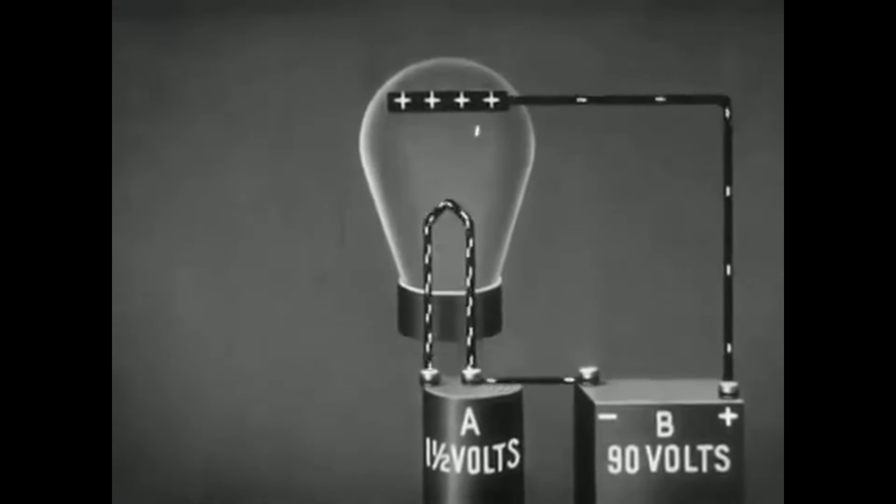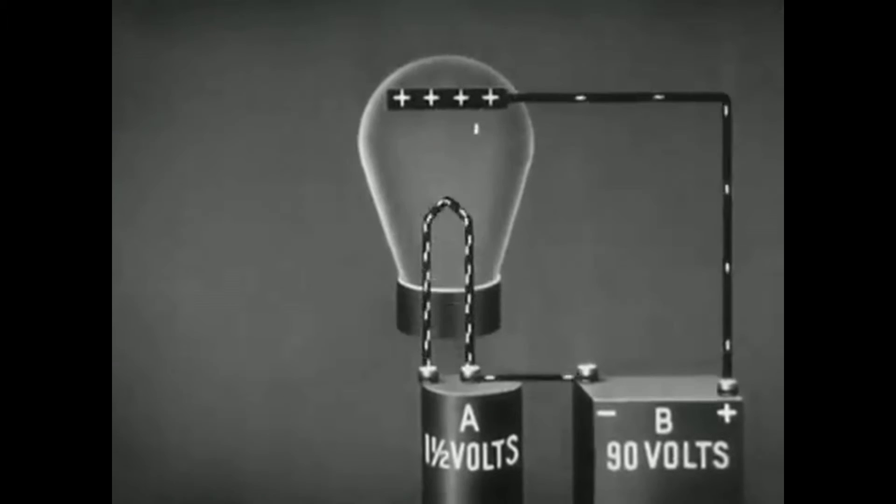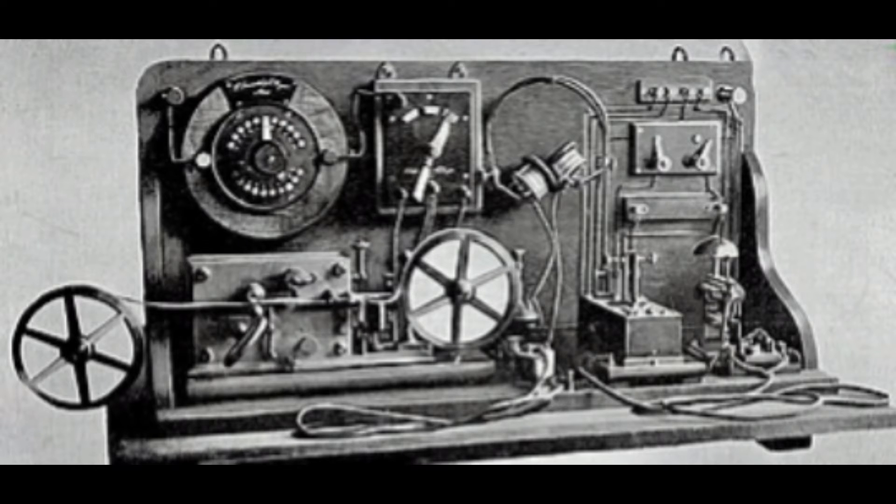The diode controlled one-way flow of current and was used in amplitude modulated receivers, but had no amplification and couldn't amplify signals detected.